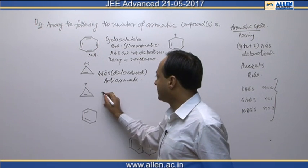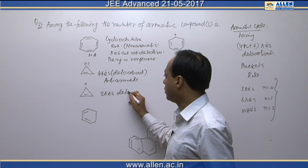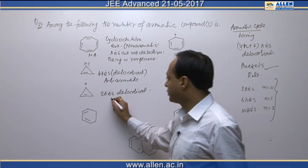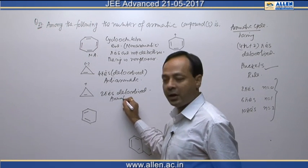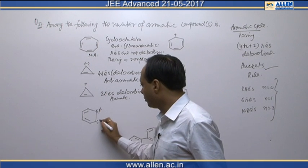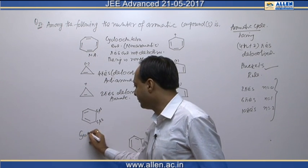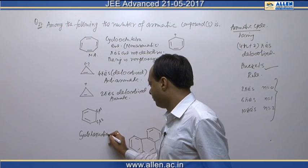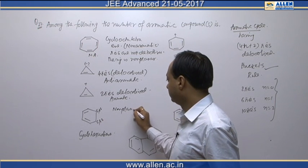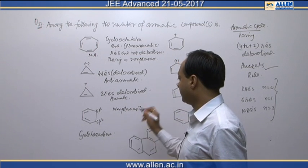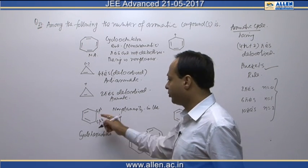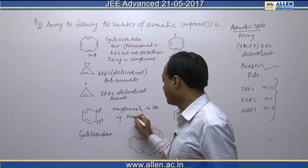The third compound has 2 pi electrons, which are delocalized, and according to Hückel's rule this compound is definitely aromatic. The next compound is cyclohexadiene; due to non-planarity of the ring, the electrons are not delocalized, so it is a non-aromatic species.